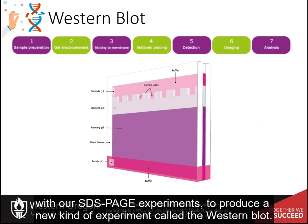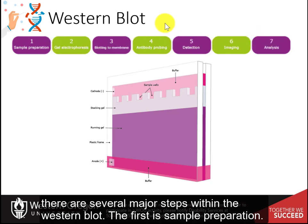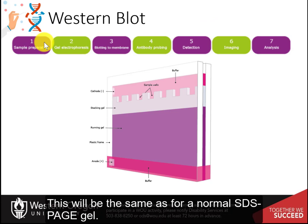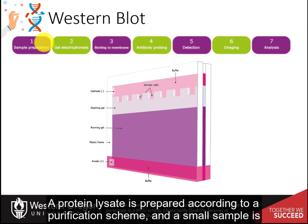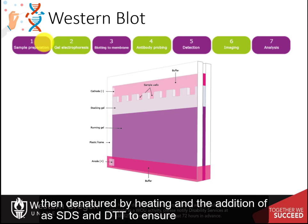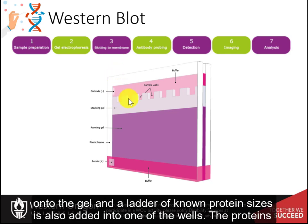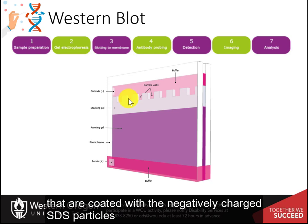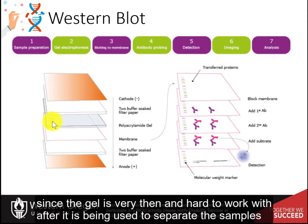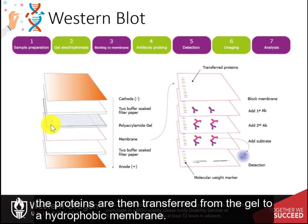Antibodies can be combined with our SDS-PAGE experiments to produce a new kind of experiment called the western blot. There are several major steps within the western blot. The first is sample preparation, which is the same as for a normal SDS-PAGE gel: a protein lysate is prepared according to a purification scheme, and a small sample is then denatured by heating and the addition of SDS and DTT to ensure that the protein migrates in the gel based on size. The samples are loaded onto the gel with a ladder of known protein sizes. Since the gel is very thin and hard to work with after separation, the proteins are then transferred from the gel to a hydrophobic membrane — a process called blotting.